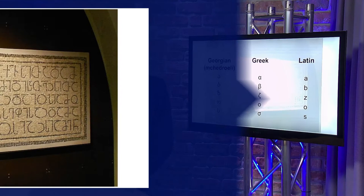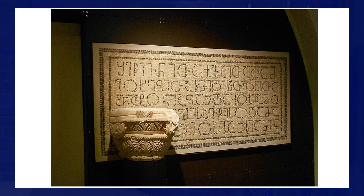The further origin of the script is unclear, but there are strong indications that it was only introduced after the Christianization of Georgia, around the year 337 AD. The first written source in the Georgian alphabet dates from the year 430 AD and was found in Palestine.